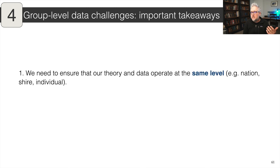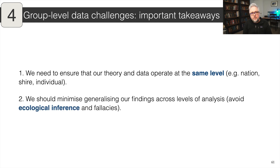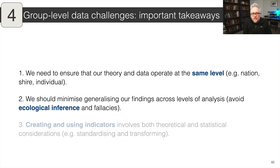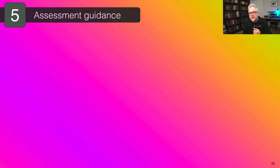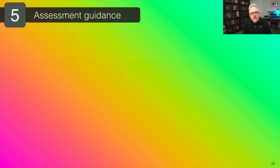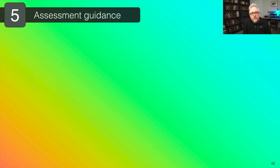Important takeaways: make sure that we are gathering data at the same level as our theory. Try to reduce the risk of ecological fallacies by avoiding using data at one level to draw conclusions at a different level. Think about how our indicators are created and used, and the potential usefulness of transforming or standardizing these measures. Try to use as many measures as we can to make sure that we're actually reducing the risk of type one and type two errors.